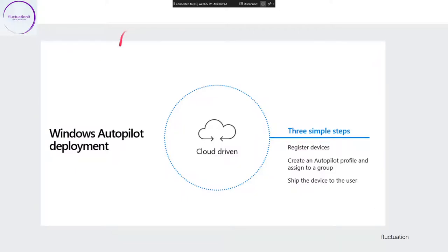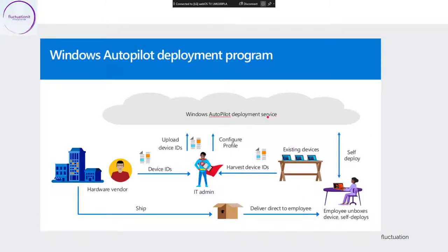Today, something very nice is Windows Autopilot deployment, because it's cloud-driven. You will need an Azure subscription with EMS and Intune. The simple step is: you take your new Windows 10 computer — imagine you have 10 new laptops from Dell — you ask Dell to give you a CSV file with the serial numbers, register those devices to an Autopilot profile in Azure, give the device to the user, and when the user receives the laptop they just type their Azure AD username and it deploys everything without an image.